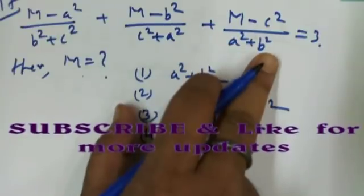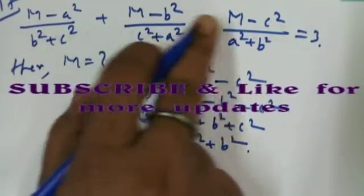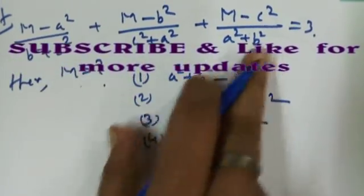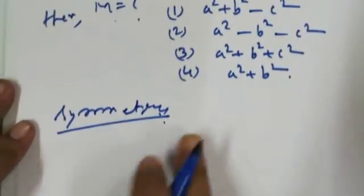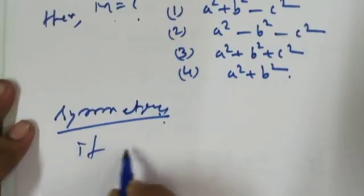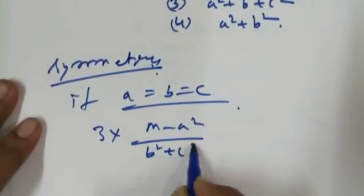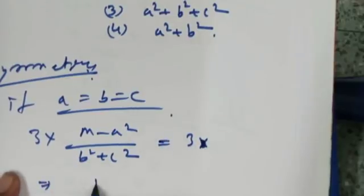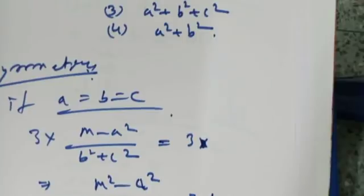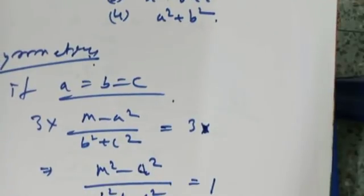The three portions — M−A², M−B², M−C² over B²+C², C²+A², A²+B² — are the same type, so this is symmetry. Putting A = B = C, we get 3 × (M−A²)/(2A²) = 3. So (M−A²)/(2A²) = 1, meaning M−A² = 2A², and therefore M² = 3A², giving M² = A²+B²+C².